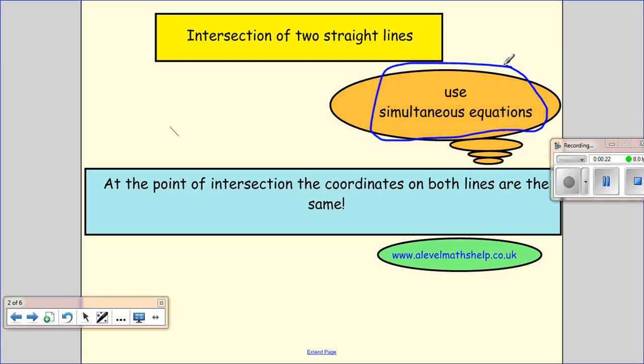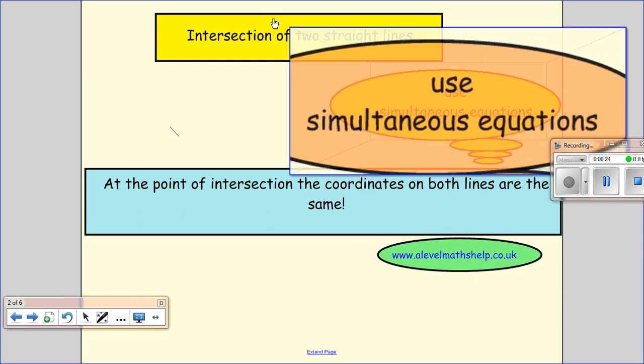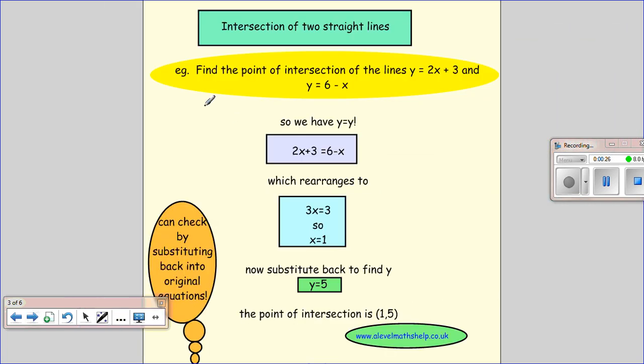Here's a question: find the point of intersection of the lines y=2x+3 and y=6-x. Because they're both in terms of y, we just put y equals y, and therefore we get 2x+3=6-x. We can then rearrange and we get x=1.